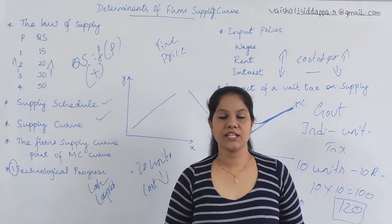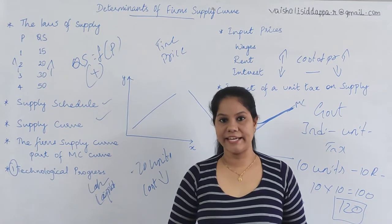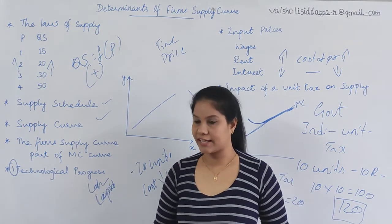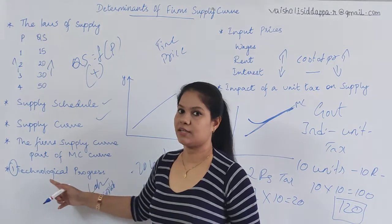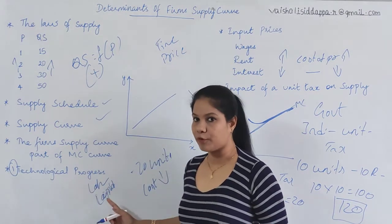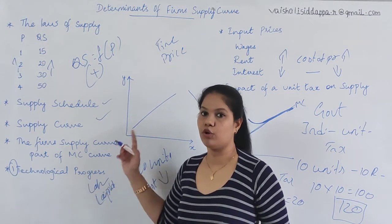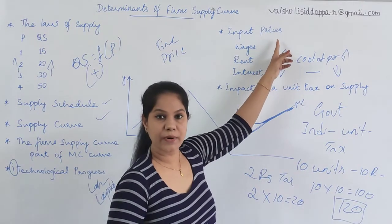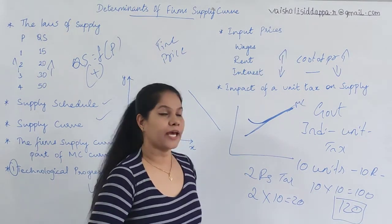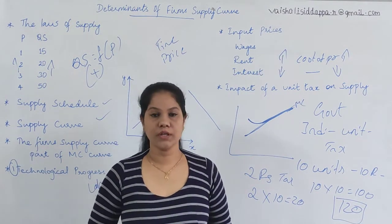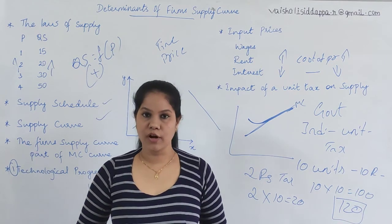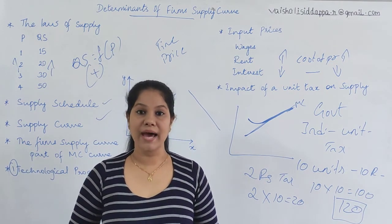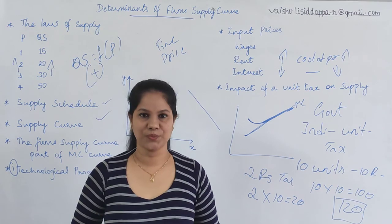So these are the determinants of the firm's supply curve. The three things to understand are: first, technological progress and how it impacts production; second, input prices; and third, the impact of unit tax. Hope you got this. Thank you so much. I will be continuing with the market supply curve. Thank you.